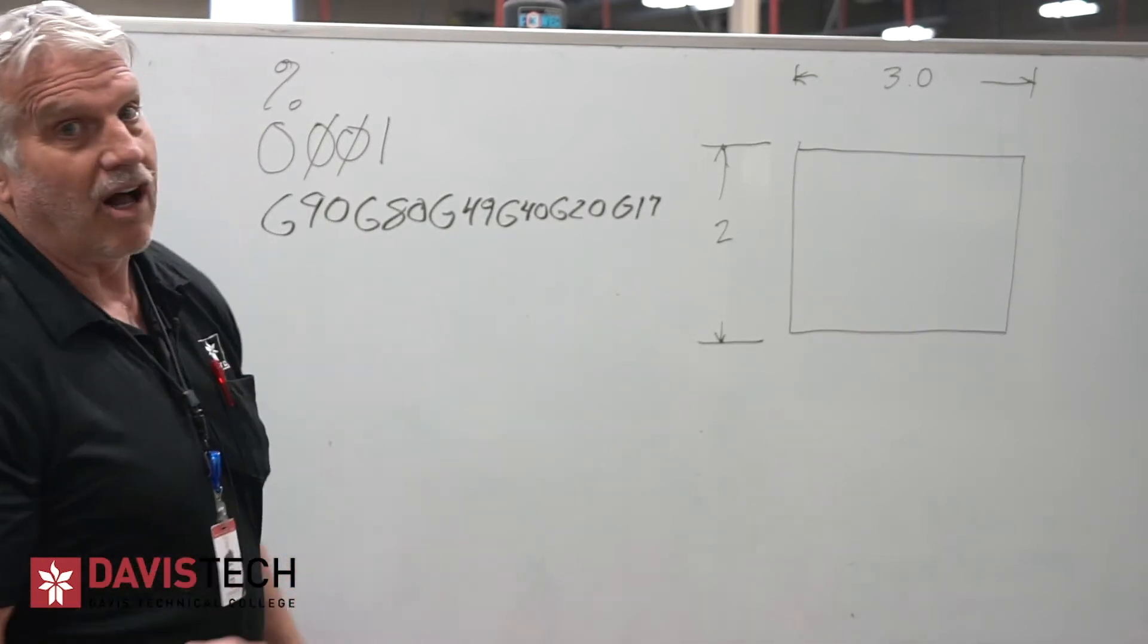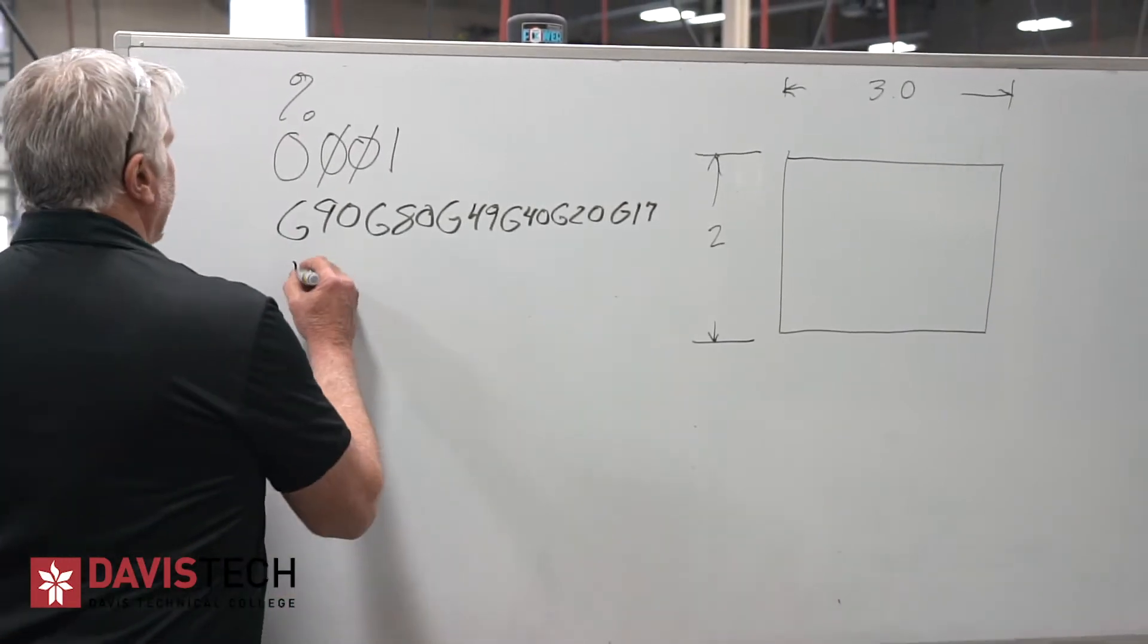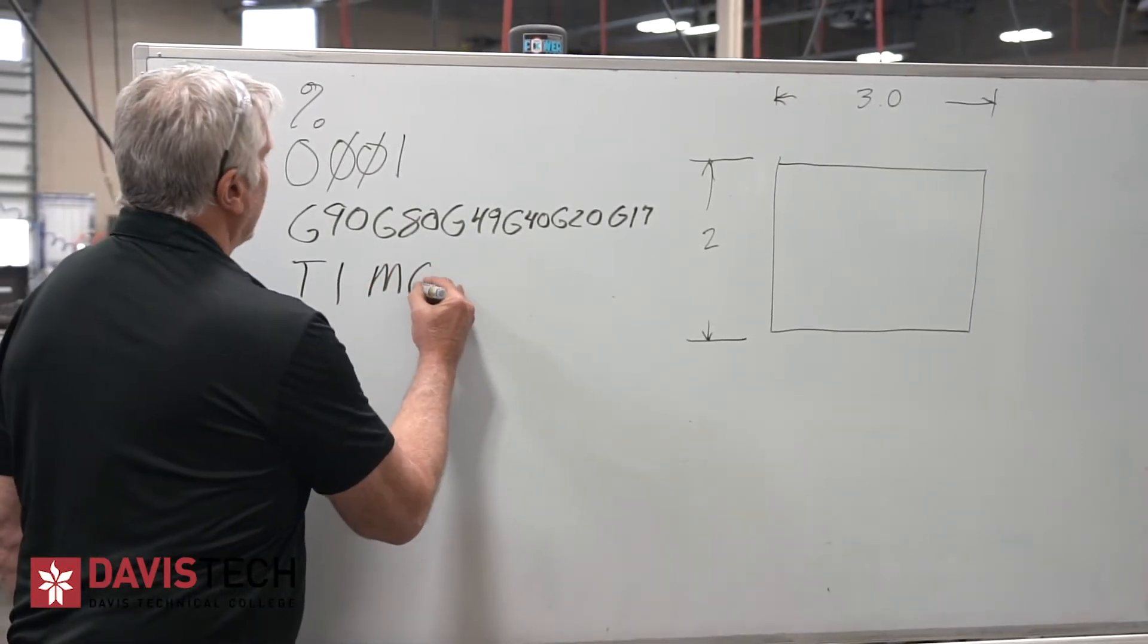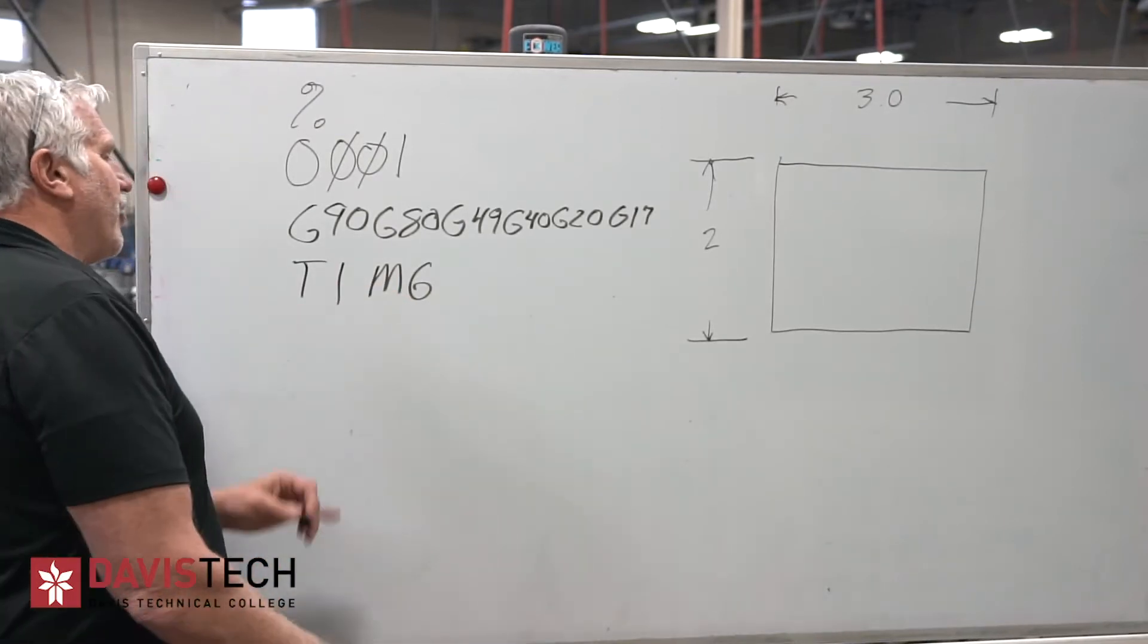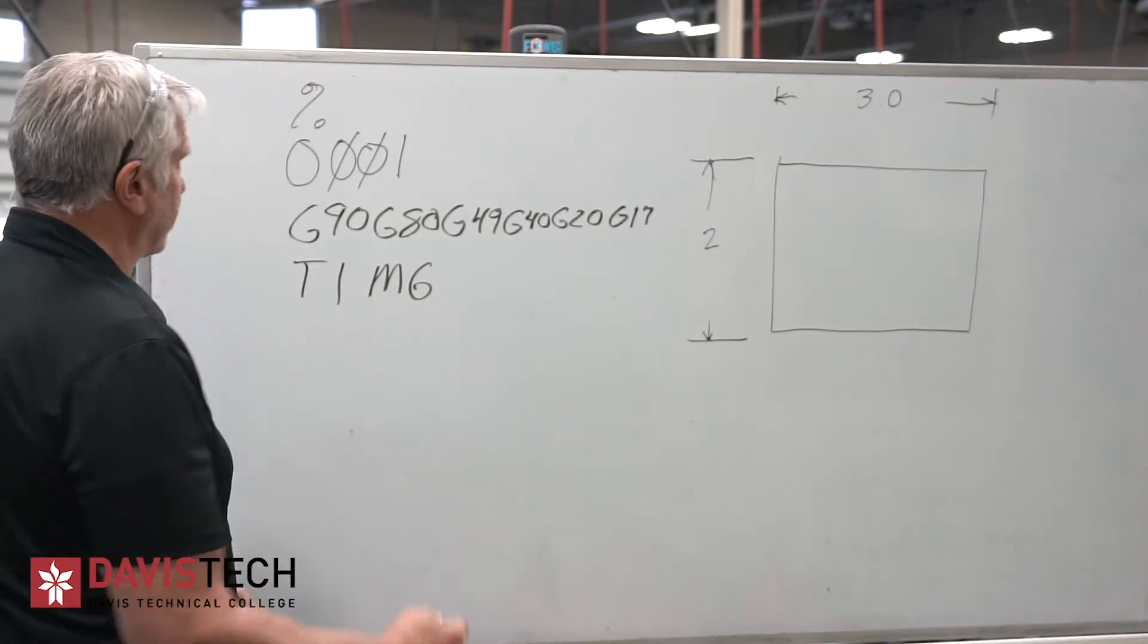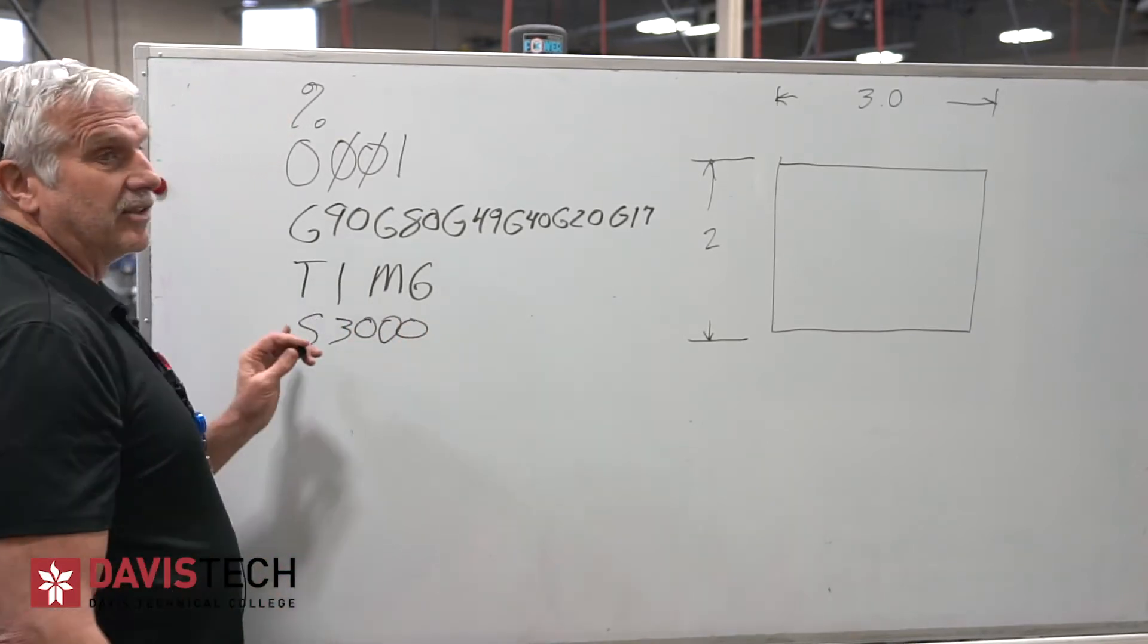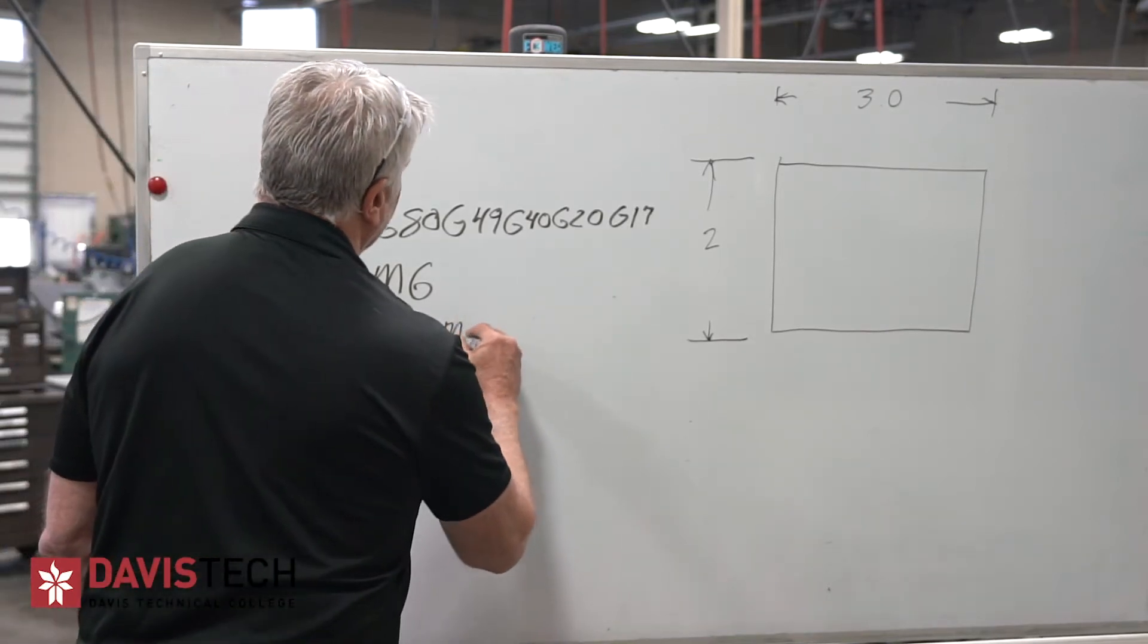The next thing I'm going to do is I'm going to call my tool. It might be a half inch tool or three eighths tool or quarter inch tool. So this case, we're just going to call it tool one. That calls up the tool. M6 means make sure it's in the holder. So now we have our tool in the spindle. The next thing we want to do is call up a spindle speed. So let's say I want S of 3000 RPM. So there's my spindle speed of 3000. I want to turn it on clockwise. To turn it on clockwise, it's M3.